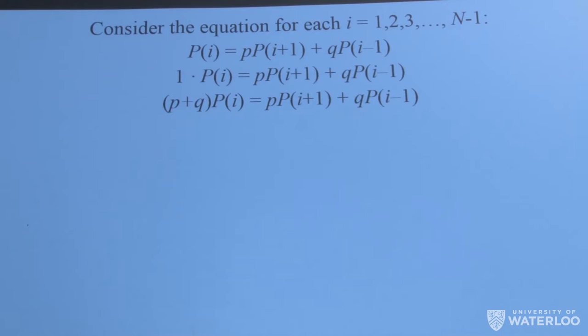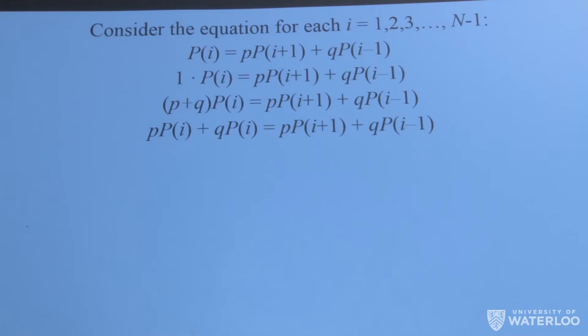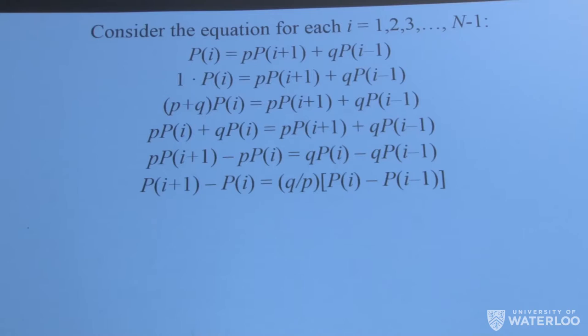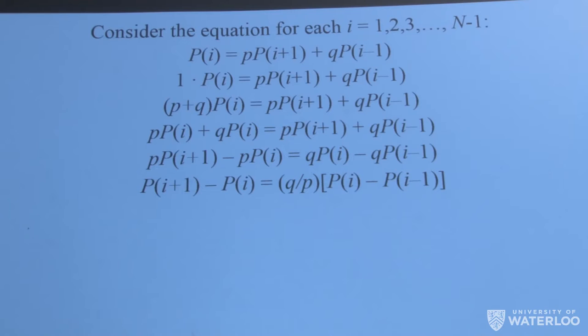So if we take that number 1 and write it in a slightly fancier way, 1 is nothing more than P plus Q. Right? Just a fancy way of writing the number 1. Now, what's interesting about that is if I expand the left-hand side of that equation, I can write that as P times capital P i plus Q times capital P i. And what you notice is that things start to look very similar on left and right-hand sides. So if I just rearrange terms, so I bring all the values that have a common factor of P over to the left side and all the ones that have a common factor of Q on the right-hand side, then I can write this equation and solve for the difference of P i plus 1 minus P i in terms of a recursive relation where I'm multiplying by this constant Q over P. So this is now the point from which I'm going to work with.